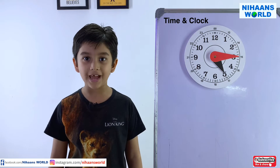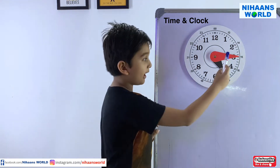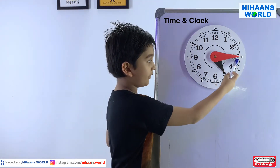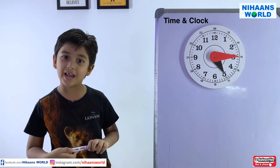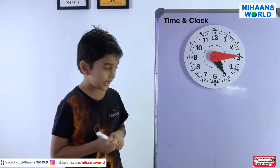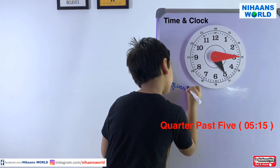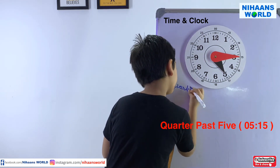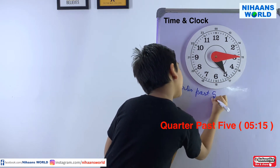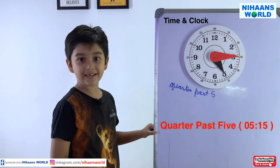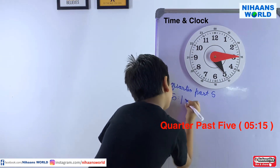Friends, here is another clock. The minute hand is at 3 and the hour hand is at 5. What is the time? The time is quarter past. We can write it as 5:15.